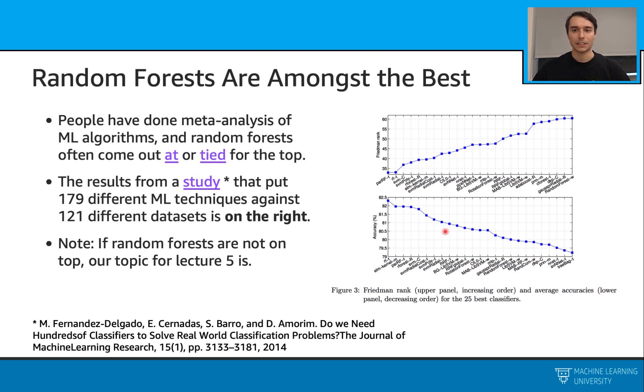In this study, they found out that for the Friedman ranking, the random forest model is at the top. And also for the average accuracies, when we look at all the algorithms, we see the random forest model at the top.